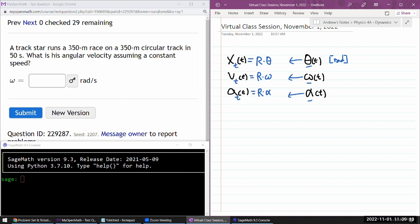Here it says a track star runs a 350-meter race on a 300-meter circular track in 50 seconds, asking what is its angular velocity assuming constant speed. It looks like we are given enough information to calculate its average speed or constant speed. Its average tangential speed is the distance 350 meters per time 50 seconds. From that, through this relationship, I can work it back to angular velocity.